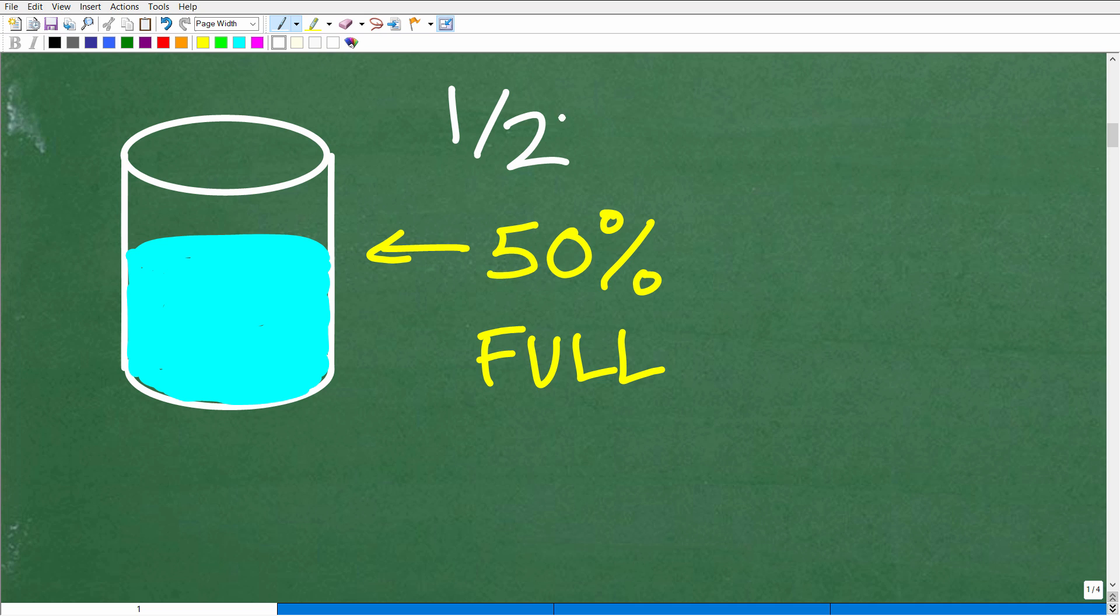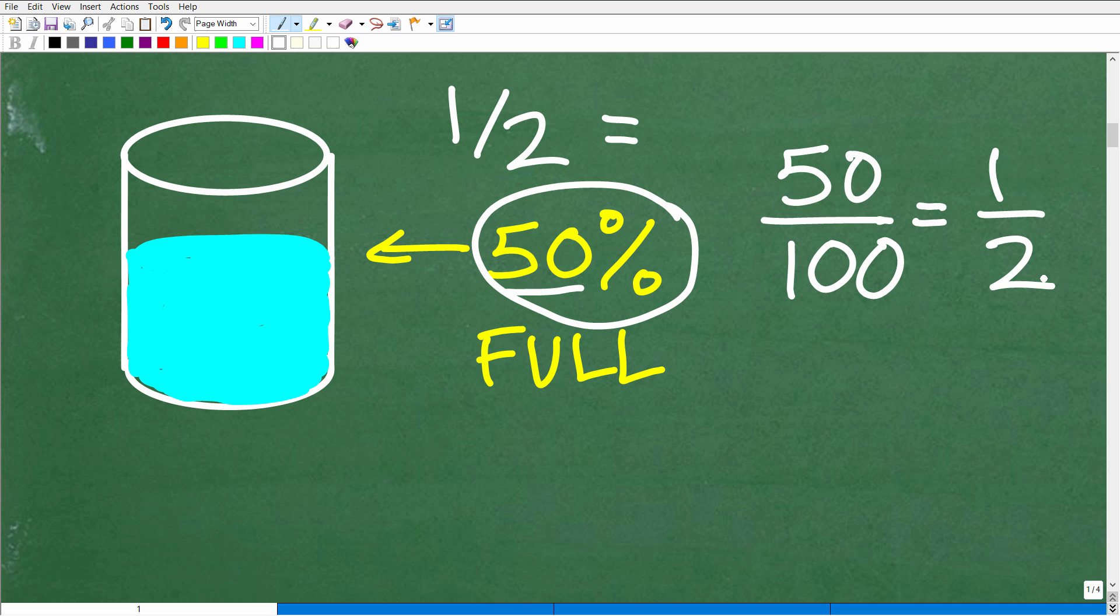It's one half full. Well, that's absolutely correct. The cup is one half full, and so that is the same as 50%. So what is the definition of percent? Percent is when we compare a number to 100. So 50% is when we compare 50 to 100. Comparing any number to 100 is a percent. So 50 over 100, we can reduce this fraction, that's the same thing as the fraction one half.